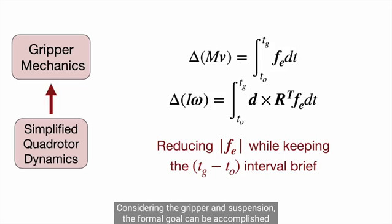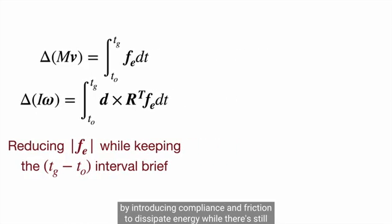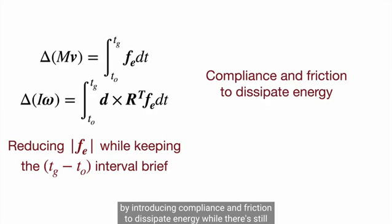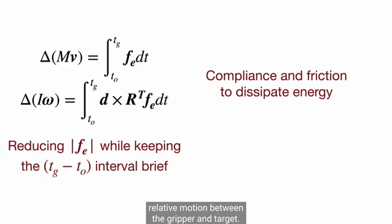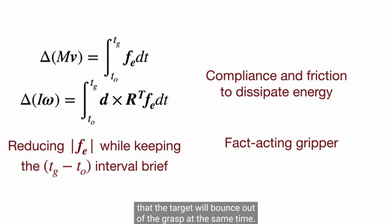Considering the gripper and suspension, the former goal can be accomplished by introducing compliance and friction to dissipate energy while there is still relative motion between the gripper and the target. The latter goal motivates a fast-acting gripper, which reduces the chance that the target will bounce out of the grasp.